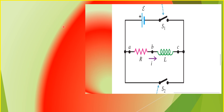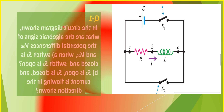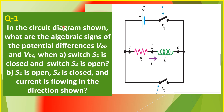So, checking your understanding, let's now answer question number one. In the circuit diagram shown here, what are the algebraic signs of the potential differences V sub AB and V sub BC? Point A and point B — so V sub AB pertains to the potential difference across the resistor R, while V sub BC is the potential difference across the inductor L.